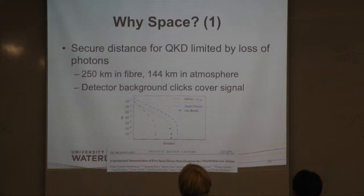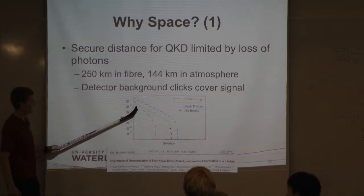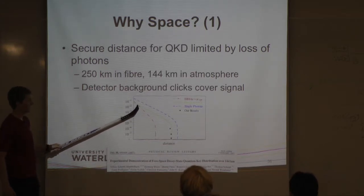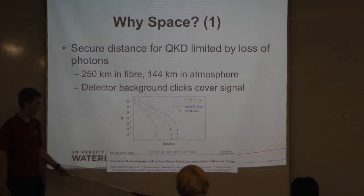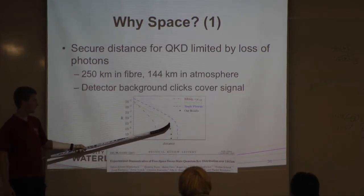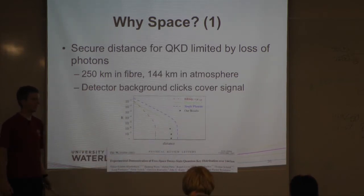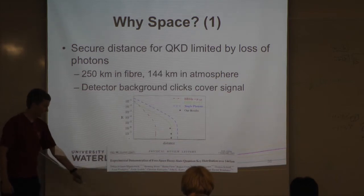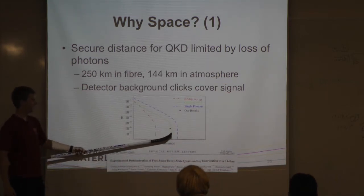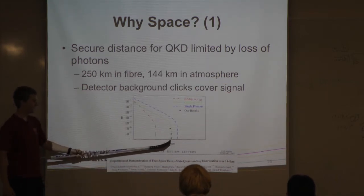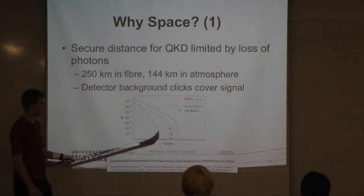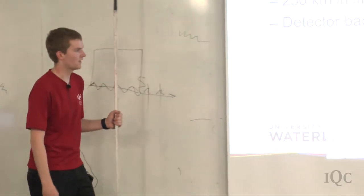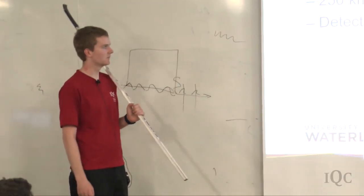This is the graph that every QKD paper must have: key rate versus distance, dropping linearly and eventually reaching a sharp cutoff where QKD rate goes to zero. Beyond that point, it's just impossible. This is basically a property of every QKD system so far.